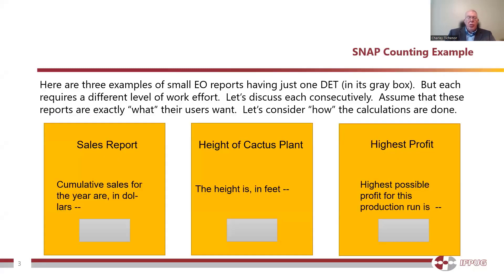Here are three examples of small reports, which in function points we call external outputs. These are reports that have calculations on them, and they have one DET in them. A DET, a data element type, can be a piece of data, it can be a piece of control information, or it can be a data operator like greater than, equal to, or something like that. Let's discuss each of these individually.